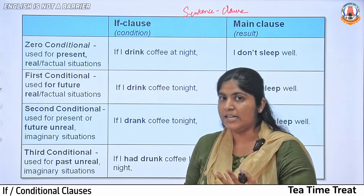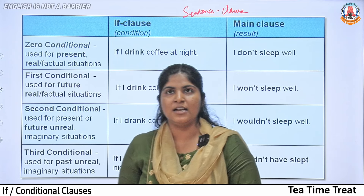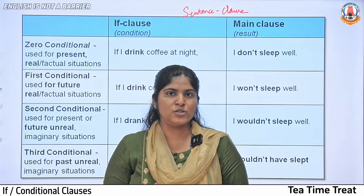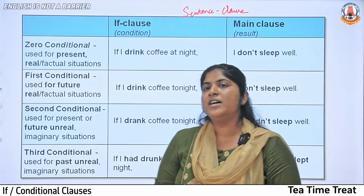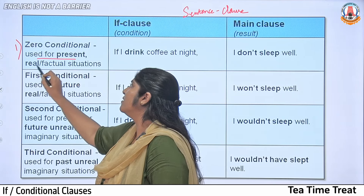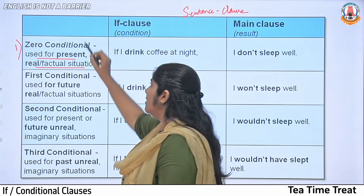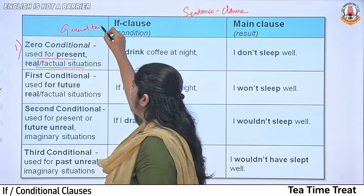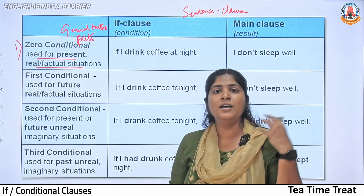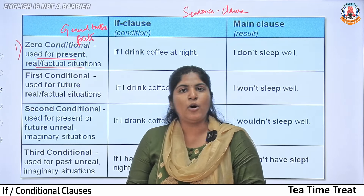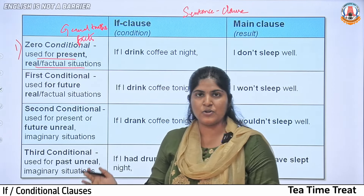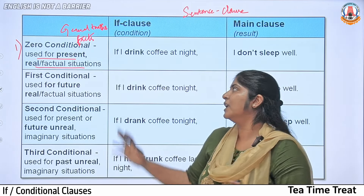Let's look at the conditional clause. There are four types of conditional clauses. The first type is the zero conditional. Zero conditionals are used for present or real factual situations — general truths and facts. For example: when water reaches 100 degrees Celsius, it boils. So, 'if water reaches 100 degrees Celsius, it boils' — this uses simple present tense.